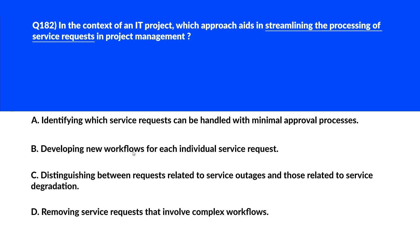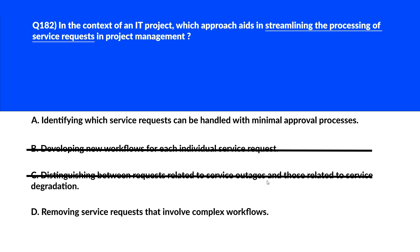Option B says developing new workflows for each individual service request. Creating new workflows for every service request can be inefficient and time consuming — this is incorrect. Option C says distinguishing between requests related to service outages and those related to service degradation. While separating these is important, it doesn't streamline the fulfillment process — we'll reject this. Option D says removing service requests that involve complex workflows. Eliminating complex service requests may not be feasible or practical and doesn't address overall fulfillment efficiency.